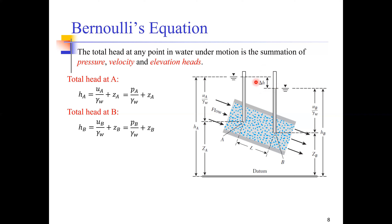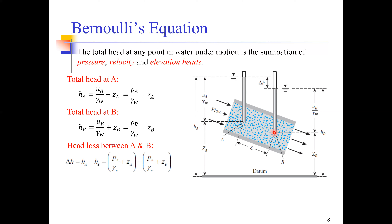How can we determine the head loss — how much energy is lost while water moves from point A to point B? This is quite simple: since point A has higher energy and point B has lower energy, we simply take the difference between the head at point A and the head at point B. We insert the values of H_A and H_B to determine the head loss.